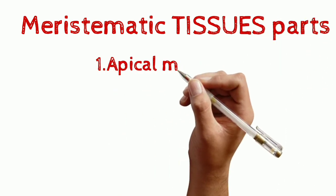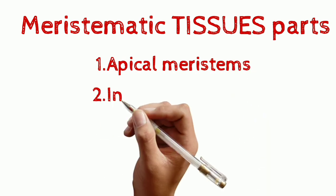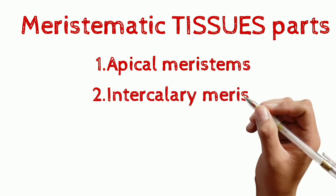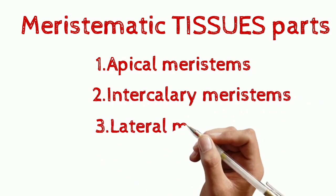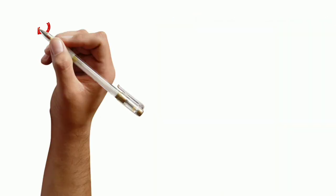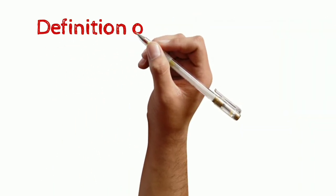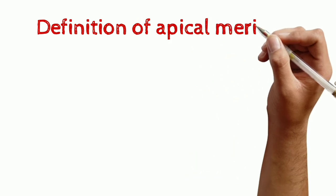Number one: apical meristematic tissues. Number two: intercalary meristematic tissues. Number three: lateral meristematic tissues. Now we will discuss the definition of apical meristematic tissues.